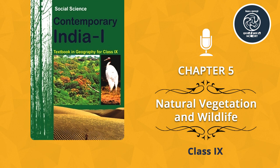Page 44. Human beings are also an integral part of the ecosystem. How do human beings influence the ecosystem of a region? They utilize the vegetation and wildlife. The greed of human beings leads to over-utilization of these resources. They cut trees and kill animals, creating ecological imbalance. As a result, some plants and animals have reached the verge of extinction. A very large ecosystem on land having distinct types of vegetation and animal life is called a biome. Biomes are identified on the basis of plants.